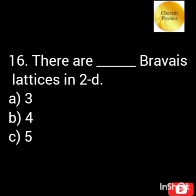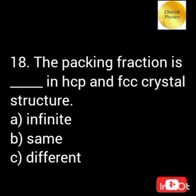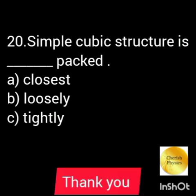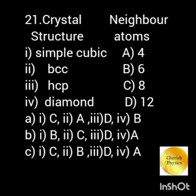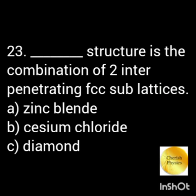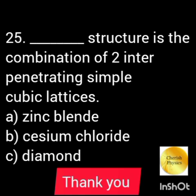There are 5 Bravais lattices in two dimensions. The closest packed crystal structures are HCP and FCC. The packing fraction is 0.74 in HCP and FCC crystal structures. Simple cubic structure is loosely packed. Diamond structure is loosely packed. The diamond structure is the combination of two inter-penetrating FCC sub-lattices. The zinc blende structure is one in which the two FCC sub-lattices are occupied by different elements. The caesium chloride structure is the combination of two inter-penetrating simple cubic lattices.